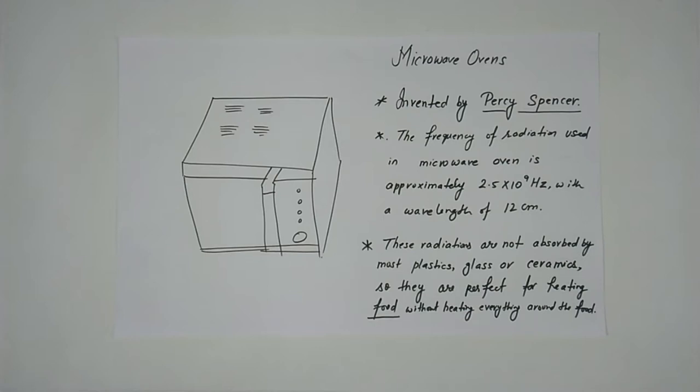A conventional oven heats food very slowly from the outside in, but a microwave oven uses tiny high-powered radio waves to cook food more evenly. A microwave oven cooks roughly six times faster than a conventional oven.